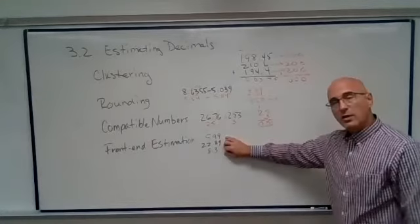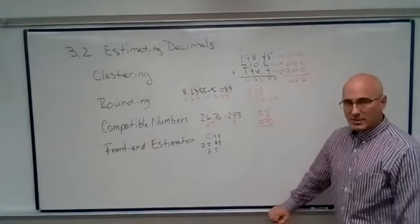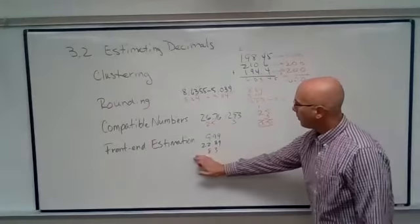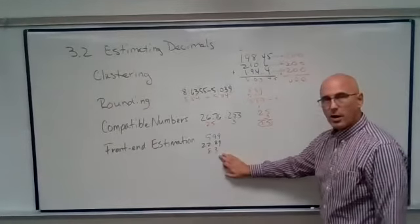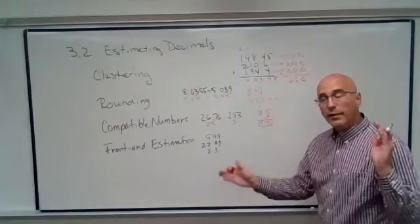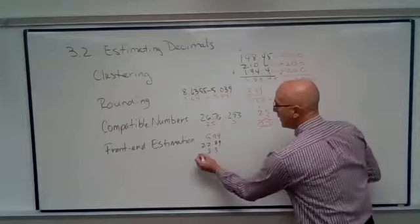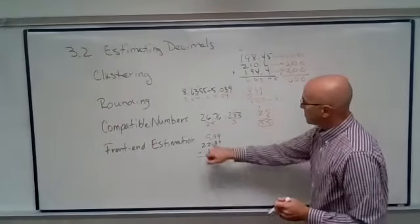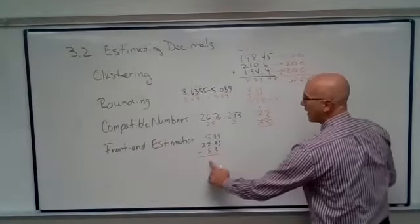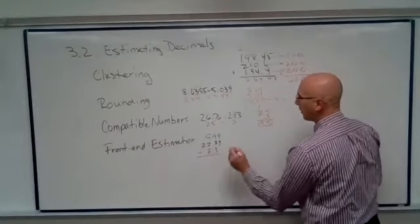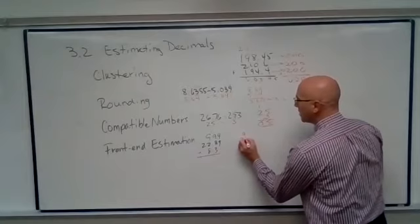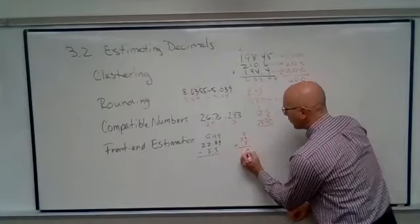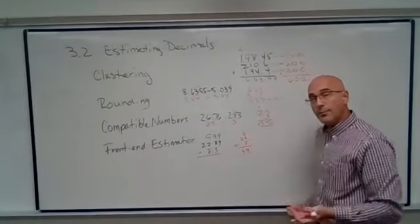And then finally, we can use what's called front-end estimation. So what this does is kind of breaks the whole number and the decimal apart. And we get a range of what our actual sum or difference might be. So if we look at first adding only the whole numbers, we get 9, 22, and 8. If we added that, we get 39.